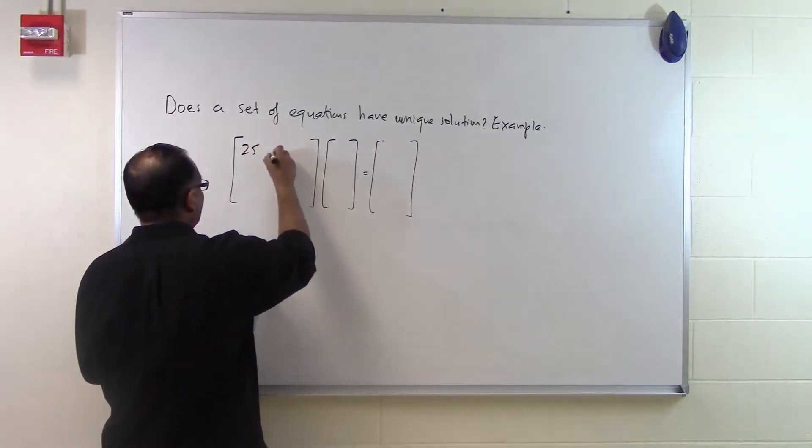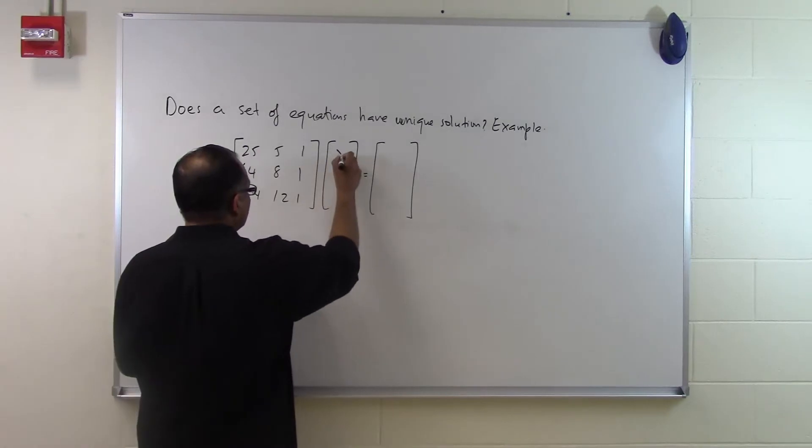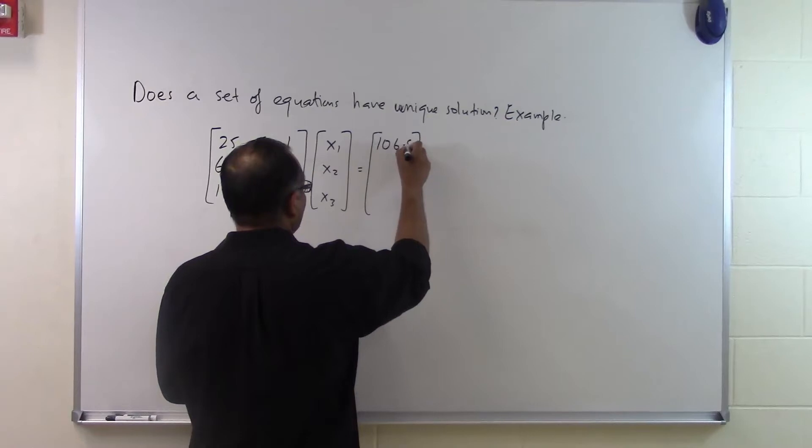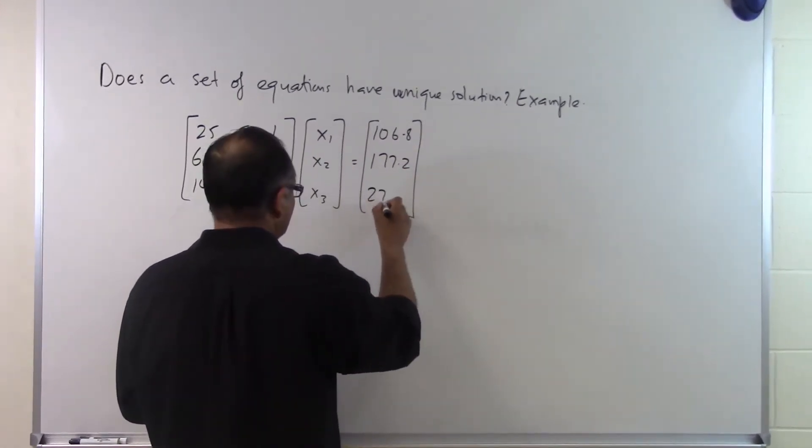So 25, 5, 1; 64, 8, 1; 144, 12, 1, and the unknowns are x1, x2, x3, and this is 106.8, 177.2, and 279.2.